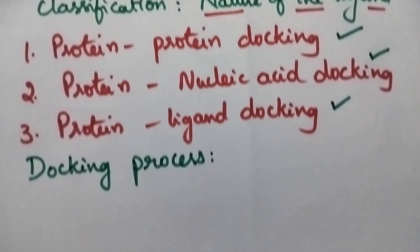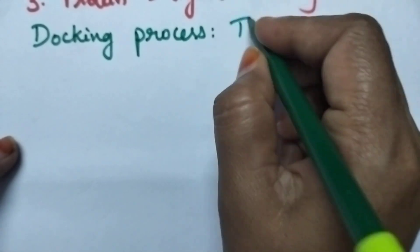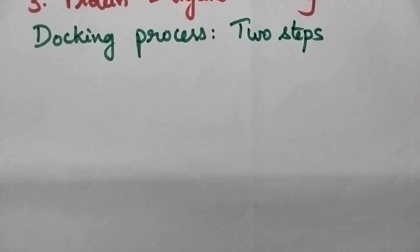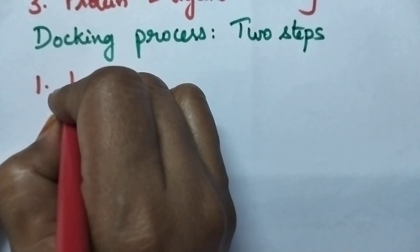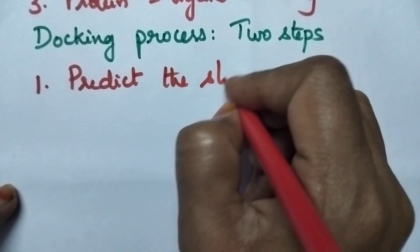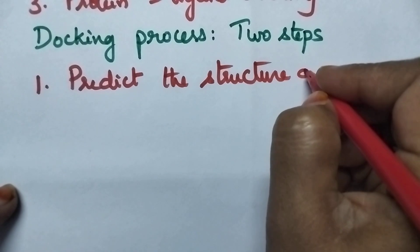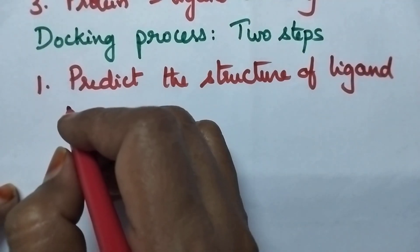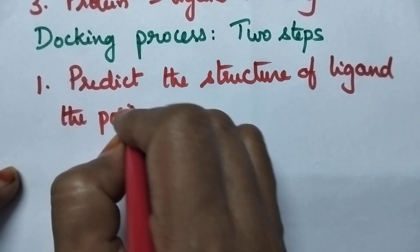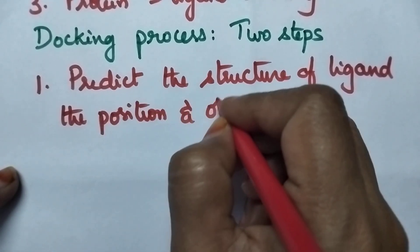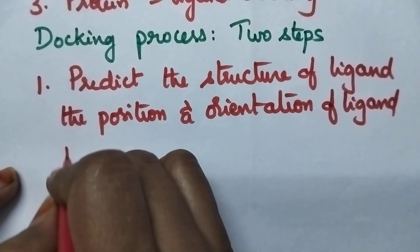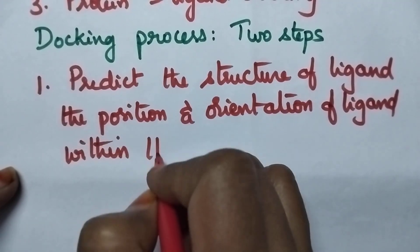The docking process involves two steps. In the first step, it is possible to predict the structure of the ligand. At the same time, it is also possible to predict the position and orientation of the ligand within the binding site.